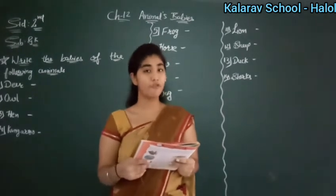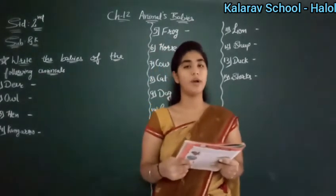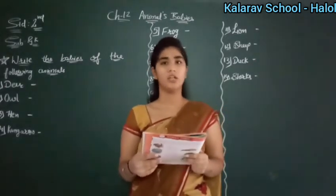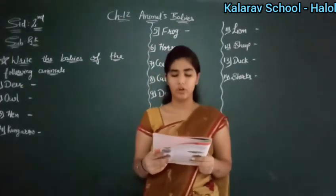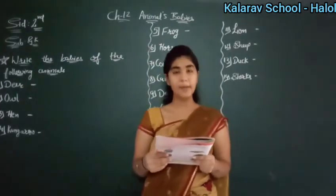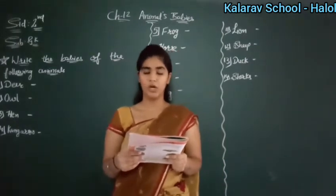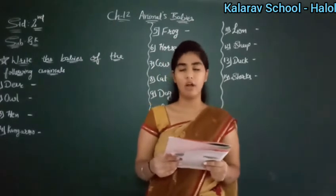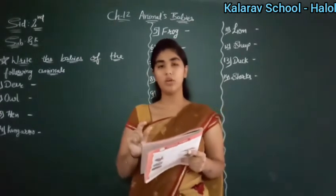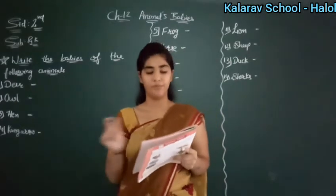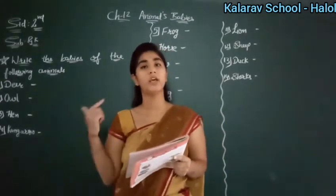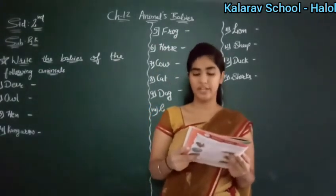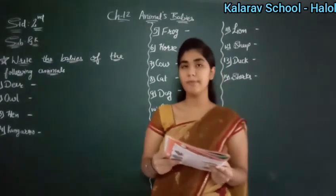So that is: 'I am formed now. I will grow up to become a dash.' Owl ki baby ko kya bolta hai? Owlet. So owl ki baby ko owlet bolta hai. So that is: owl — owlet. I am a chick now. When I grow up, I will become a dash.